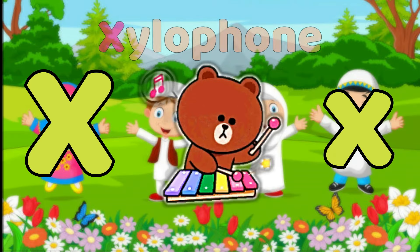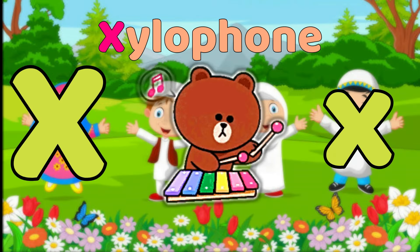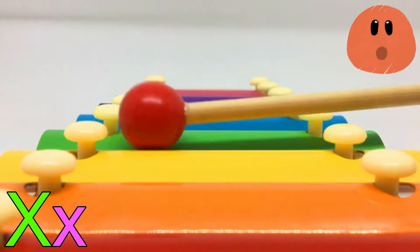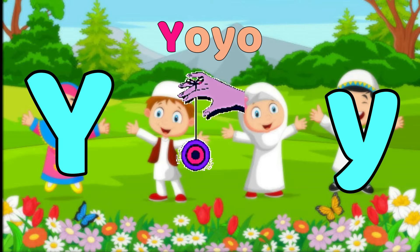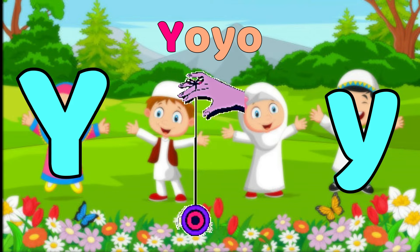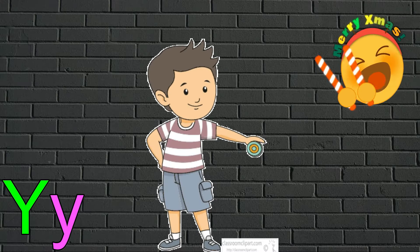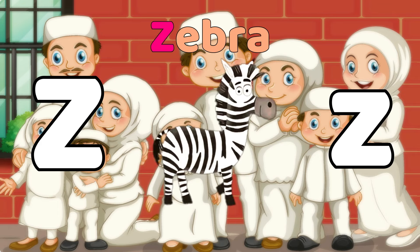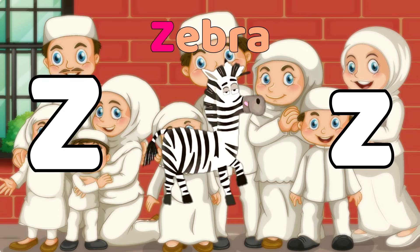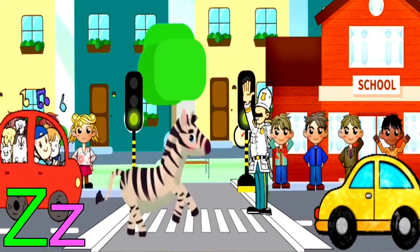X is for Xylophone. z-z-Xylophone. X, Xylophone. Y is for Yo-yo. y-y-Yo-yo. Y, Yo-yo. Z is for Zebra. z-z-Zebra. Z, Zebra.